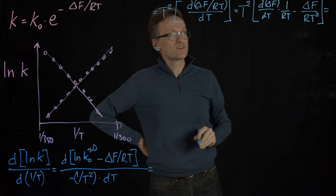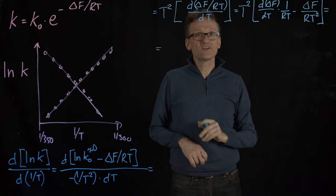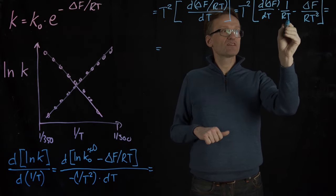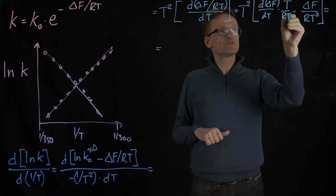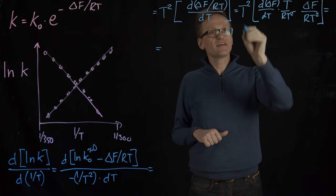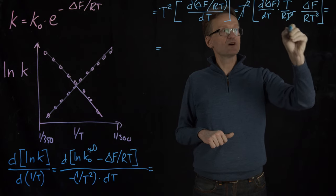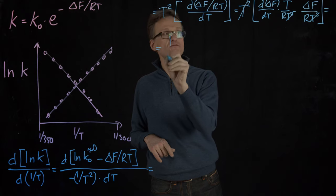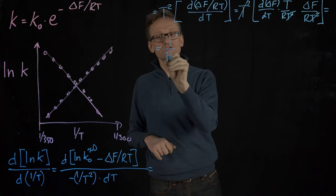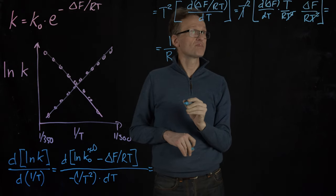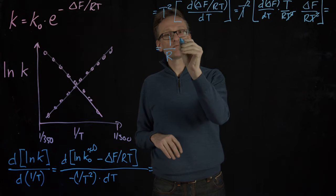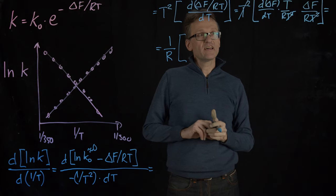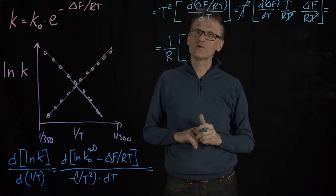And now things are actually starting to look pretty nice. I know that you might not think that yet. There's a T squared in front. I will multiply both these terms by T and then I can cancel that T squared against both those T's, and then I'll move the 1 over R in front of everything. So we have 1 over R multiplied by - what is the derivative of delta F with respect to T? Well, you know that.